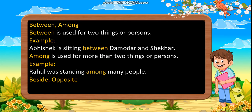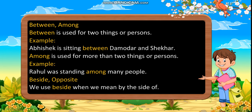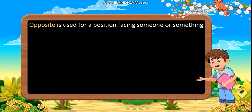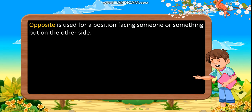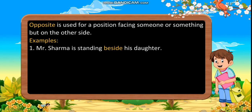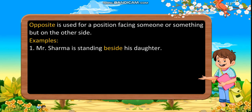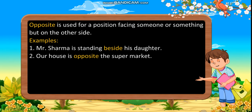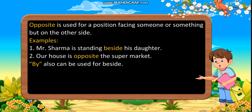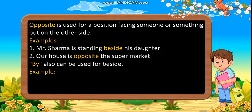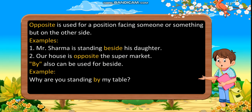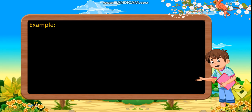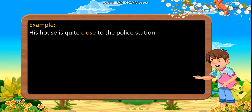Beside, opposite. We use beside when we mean by the side of. Opposite is used for a position facing someone or something but on the other side. Examples: first, Mr. Sharma is standing beside his daughter. Second, our house is opposite the supermarket. By also can be used for beside. Example: why are you standing by my table? We can also use close to. Example: his house is quite close to the police station.